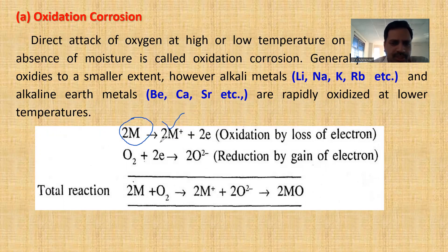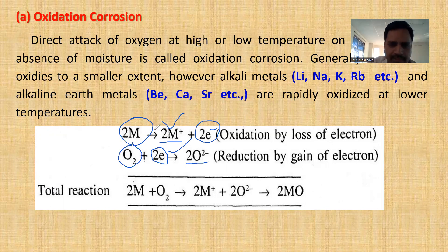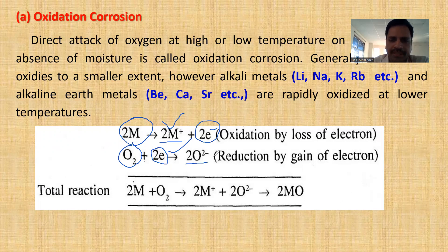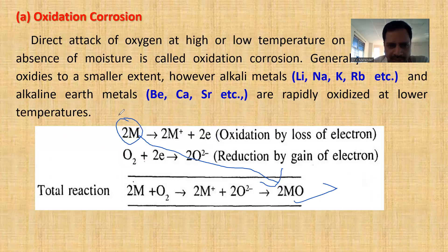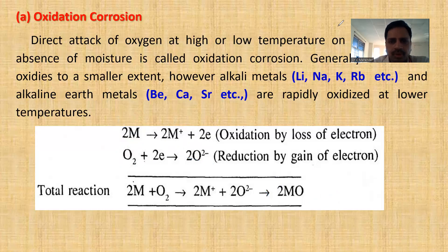In oxidation corrosion, metal always undergoes oxidation, giving rise to 2M²⁺ plus two electrons. These two electrons react with oxygen and there is a formation of 2O²⁻. This is called reduction. The overall reaction is: two metal atoms react with oxygen to form 2M²⁺ and 2O²⁻, i.e., the metal is completely converted into metal oxide. From this definition, it is proven that the metal has been converted into metal oxide — this is the process of corrosion.